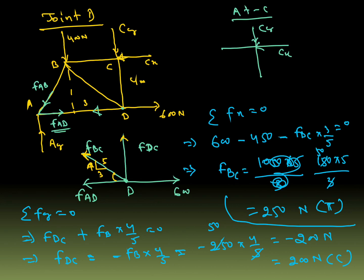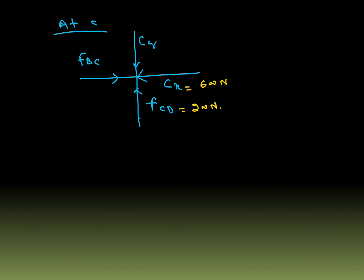At point C, all forces are co-linear. FBC is directly compressive because CX is compressive and there is no other force — only two forces, both co-linear, so FBC is also compressive, 600 N. FCD is also equal to CY, which is 200 N, compressive in nature at point C.